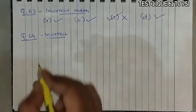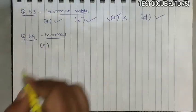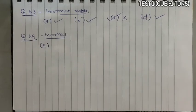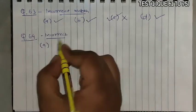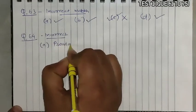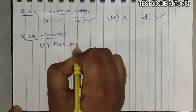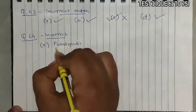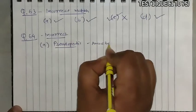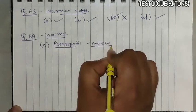Question 64: Select the incorrect match again. Statement A says 'pseudopodia are locomotory and feeding structures in sporozoans.' We know that pseudopodia is a characteristic of amoeba or amoeboid protozoans, not sporozoans. So this statement is incorrect.